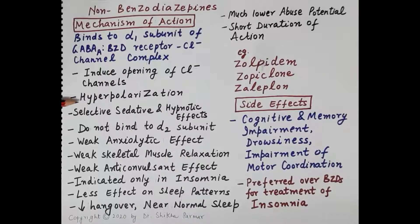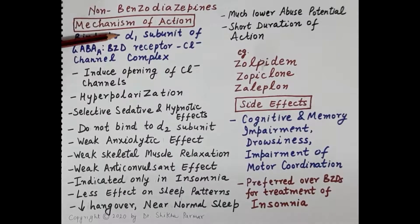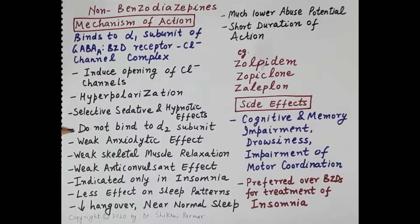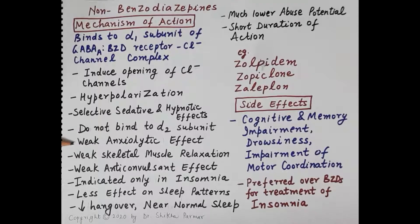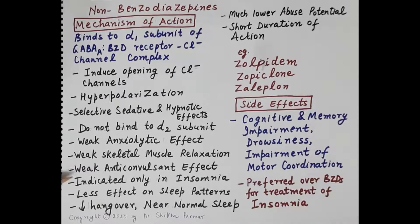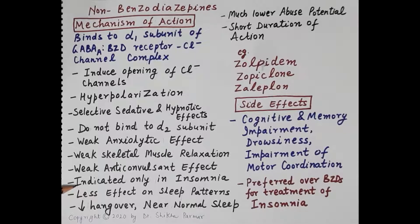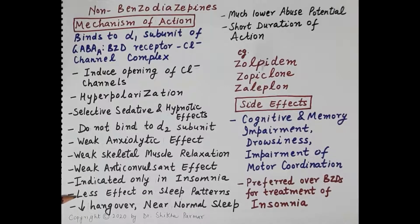Non-benzodiazepines induce the opening of chloride channels, resulting in hyperpolarization and CNS depression. They produce selective sedative and hypnotic effects because they bind preferentially to the alpha-1 subunit of the GABA-A benzodiazepine receptor chloride channel complex. They do not bind to the alpha-2 subunit, and therefore produce weak anxiolytic effect, weak skeletal muscle relaxation, and weak anticonvulsant effect. These drugs are indicated only in the treatment of insomnia.